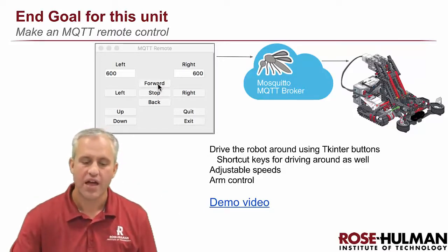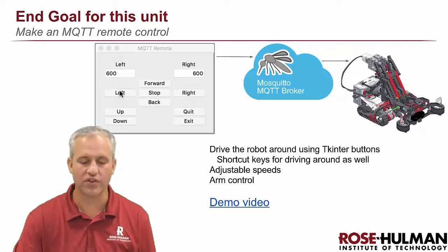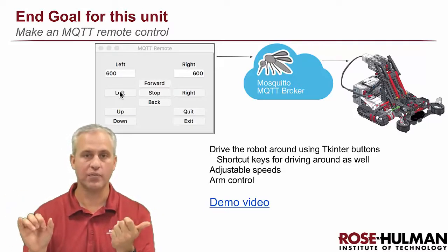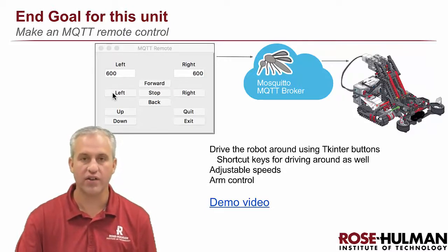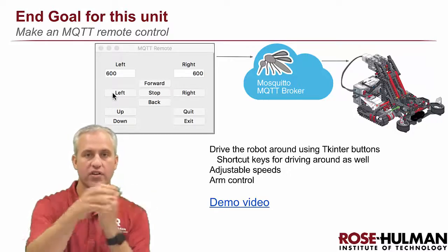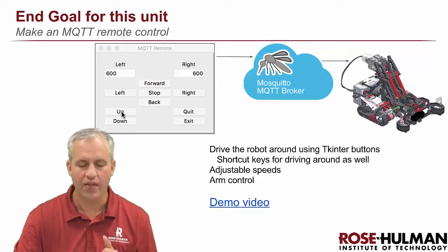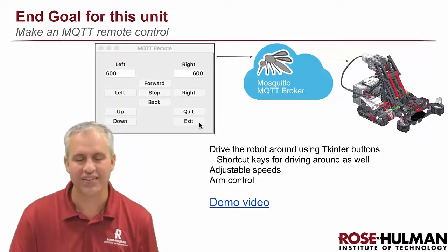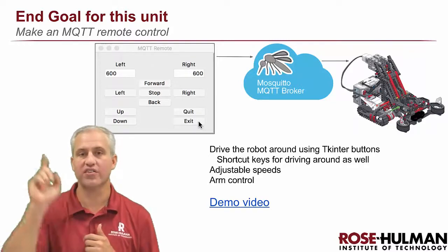Backwards just takes those two numbers and slaps a negative in front of them. Left takes the left number and makes it negative while keeping the right positive — so if you did 200 left and 600 right and hit left, it would do negative 200, positive 600 and turn that way. You'll also have an up and down button for the arm, plus an exit and a quit button. Quit just exits the program on your computer; exit sends a message to the robot to shut down its program too.